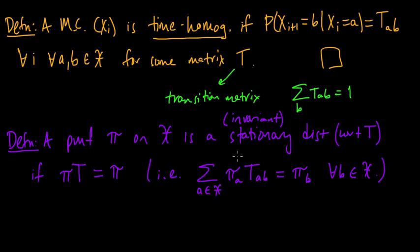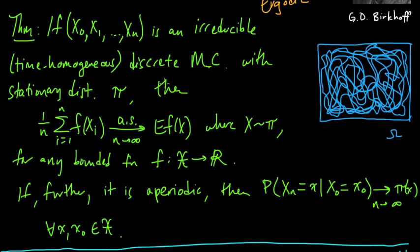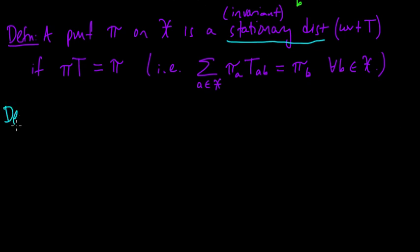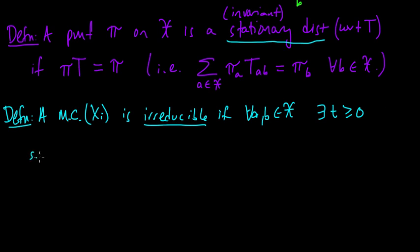Now we have a stationary distribution and a time homogeneous Markov chain. We also need to define irreducible. A Markov chain Xi is called irreducible if for any pair A and B in the space X, there exists some time T such that the probability that X_T equals B, given that X_0 equals A, is strictly positive — for any A and B.